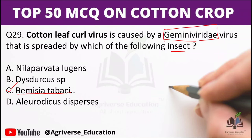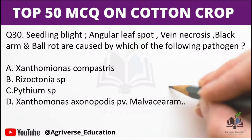Next question: Seedling blight, angular leaf spot, vein necrosis, black arm, and boll rot are caused by which pathogen? Options are: A) Xanthomonas campestris, B) Rhizoctonia species, C) Pythium species, D) Xanthomonas axonopodis pv. malvacearum. The right answer is option D — Xanthomonas axonopodis pv. malvacearum is the causal agent of seedling blight, angular leaf spot, vein necrosis, black arm, and boll rot in cotton.